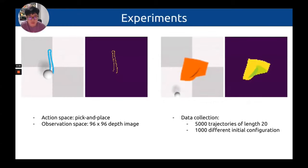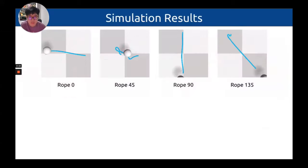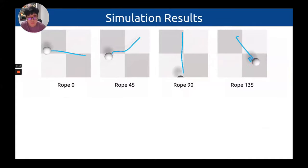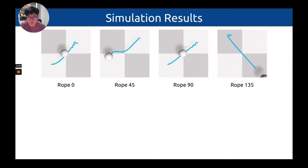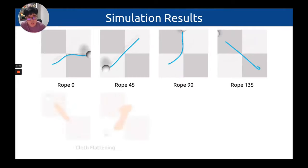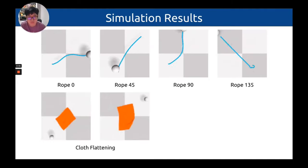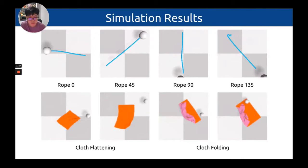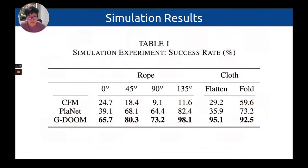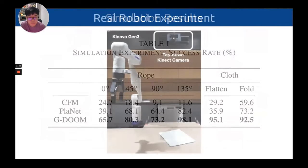We train our model in simulation with randomly sampled actions and show that the trained model can be generalized directly to a real robot without any fine-tuning. We show that our model can successfully straighten and reposition a rope to different orientations — for example, 0, 45, 90, and 135 degrees. We also show that the model can flatten a piece of crumpled cloth with different sizes and also fold them. Quantitatively, JUDOOM significantly outperforms state-of-the-art models on all rope positioning and cloth manipulation tasks by a large margin.